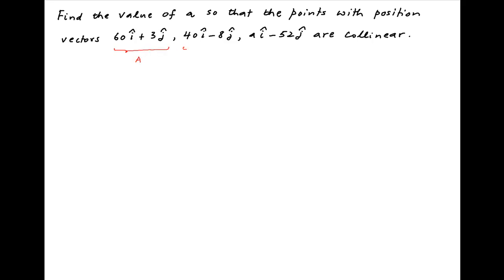Let's denote the three points by A, B and C. Now the equation of the line AB is given by vector R minus the position vector of point A which is 60i plus 3j